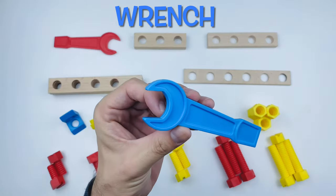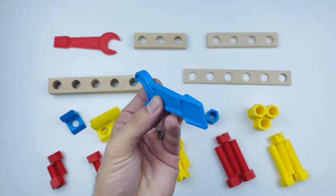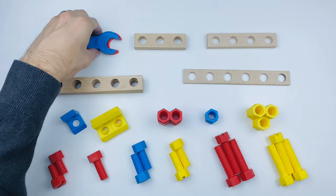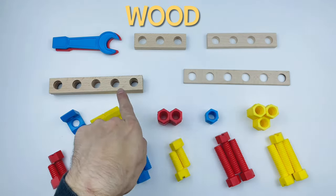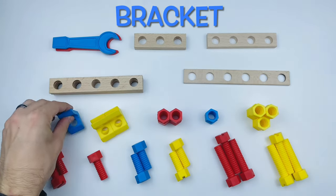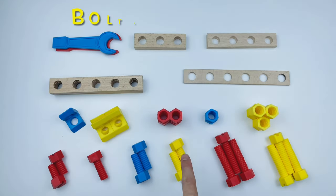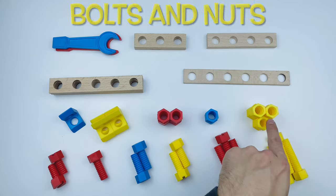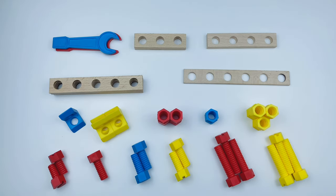We have a wrench with a screwdriver tip. We've got wooden pieces with different numbers of holes in them. We have a couple of brackets, some bolts and some nuts. Did you notice we've got red, yellow and blue? Those are the primary colors. Did you know that?